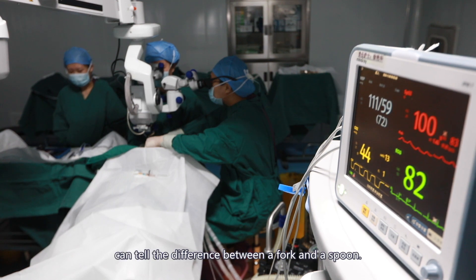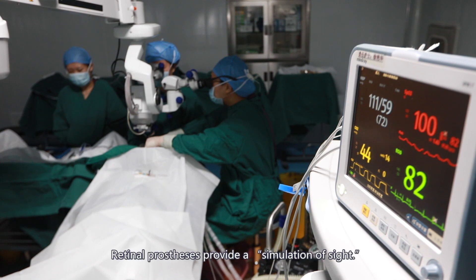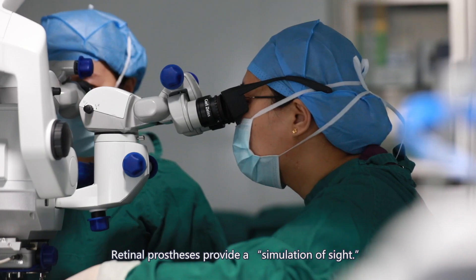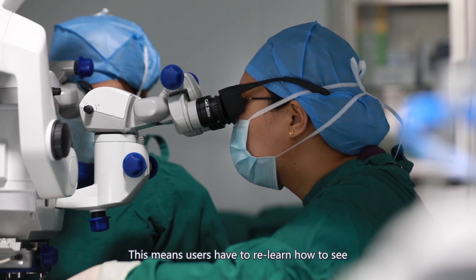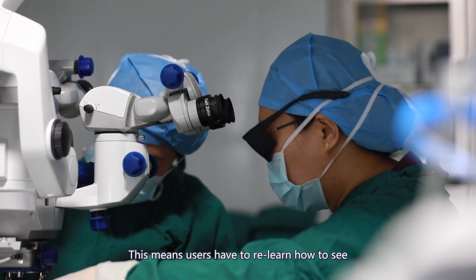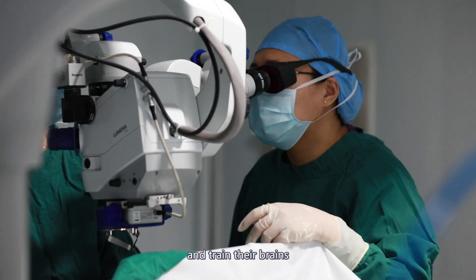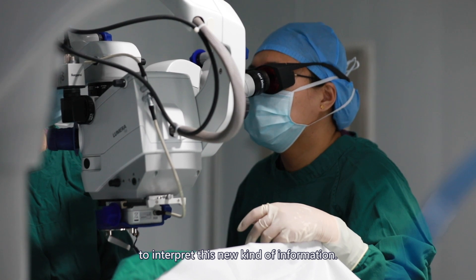In some cases, they can tell the difference between a fork and a spoon. Retinal prostheses provide a simulation of sight. This means users have to relearn how to see and train their brains to interpret this new kind of information. The results can vary widely from person to person.